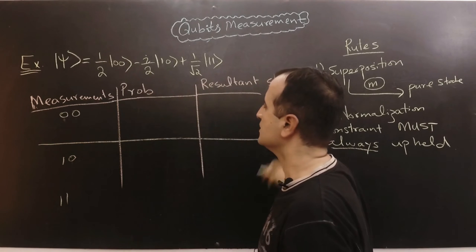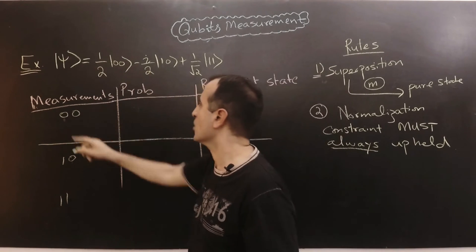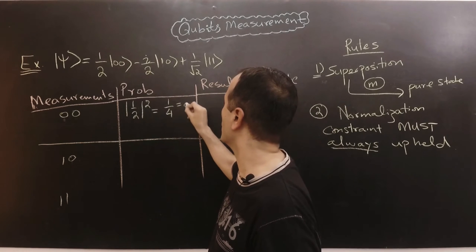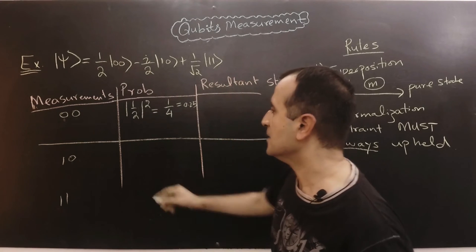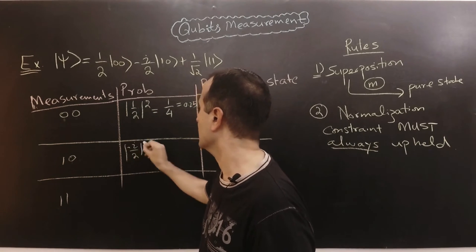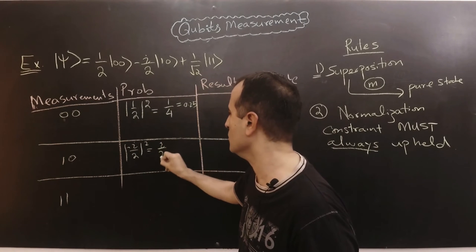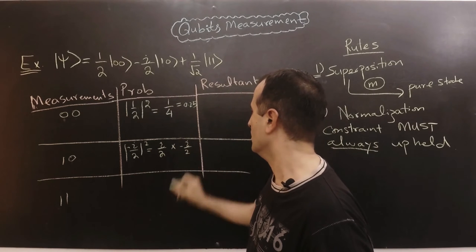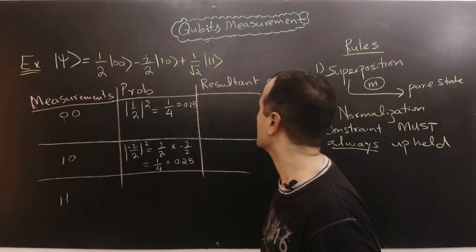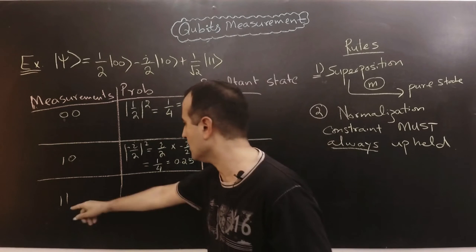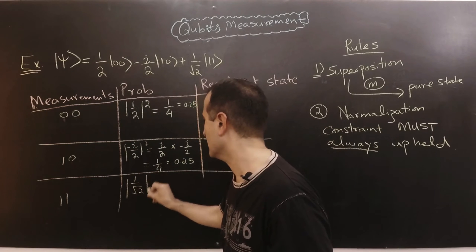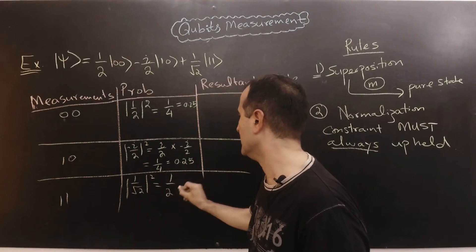The probability of each measurement is the square of its amplitude. For measuring zero-zero, the probability is |1/2|² = 1/4 = 0.25. For measuring one-zero, the probability is |−iota/2|² = (iota/2)(−iota/2) = 1/4 = 0.25. For measuring one-one, the probability is |1/√2|² = 1/2 = 0.5.